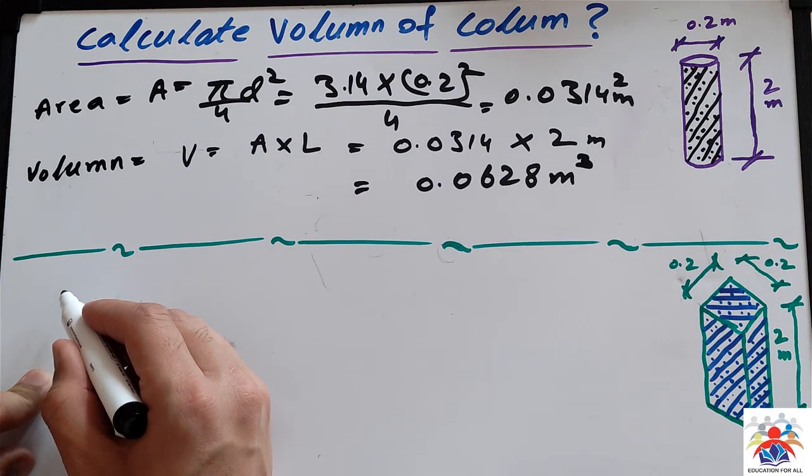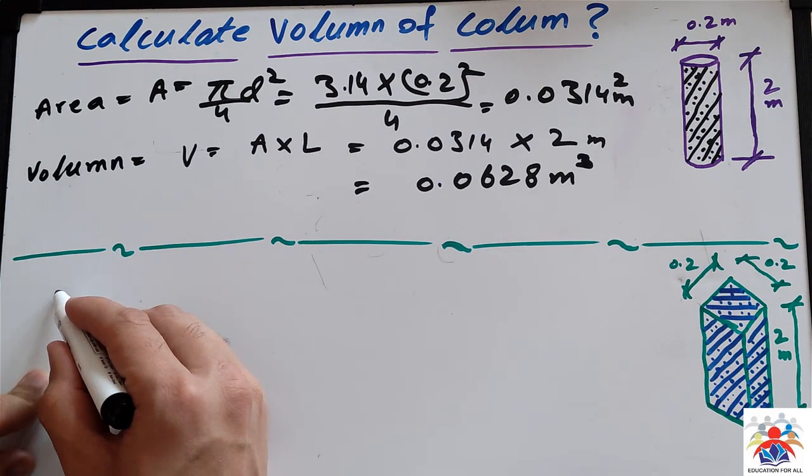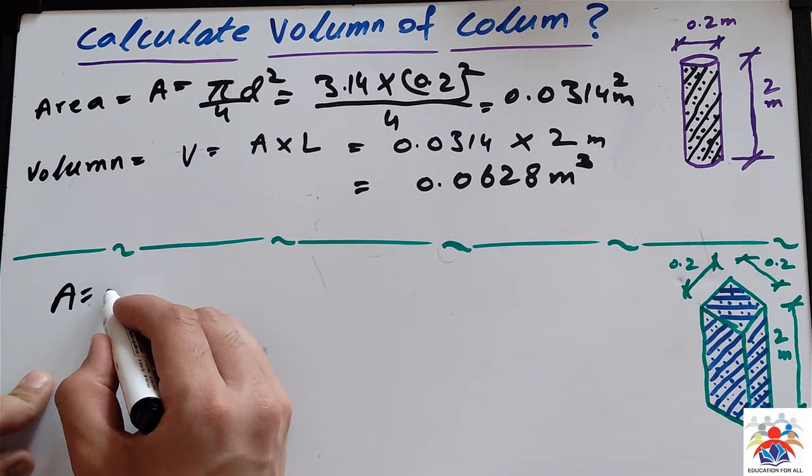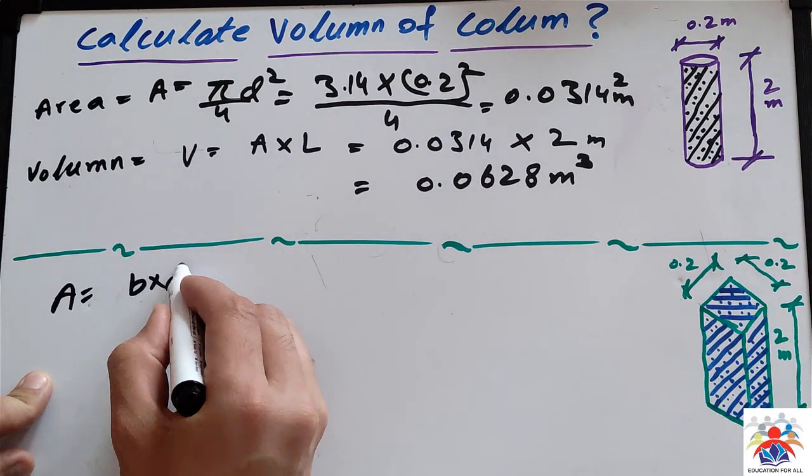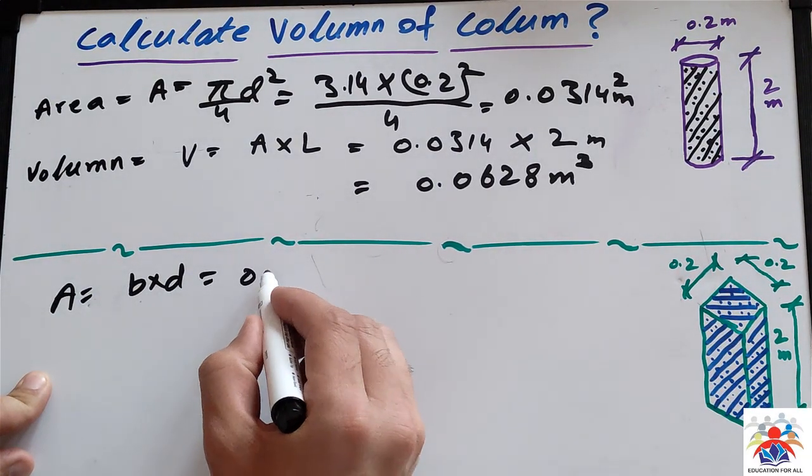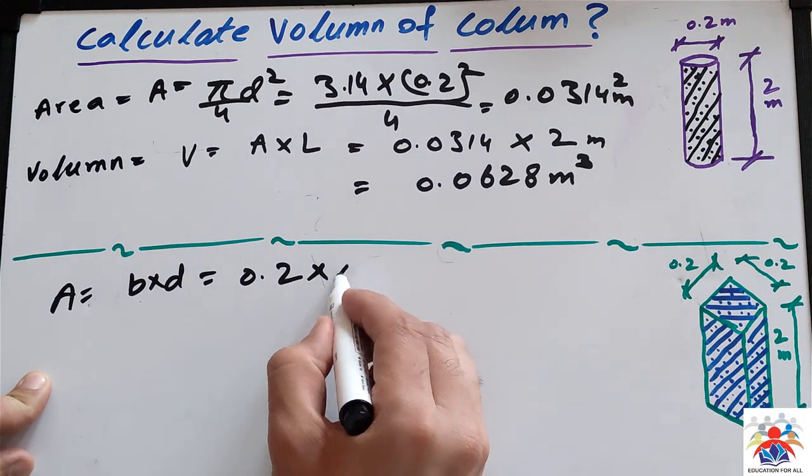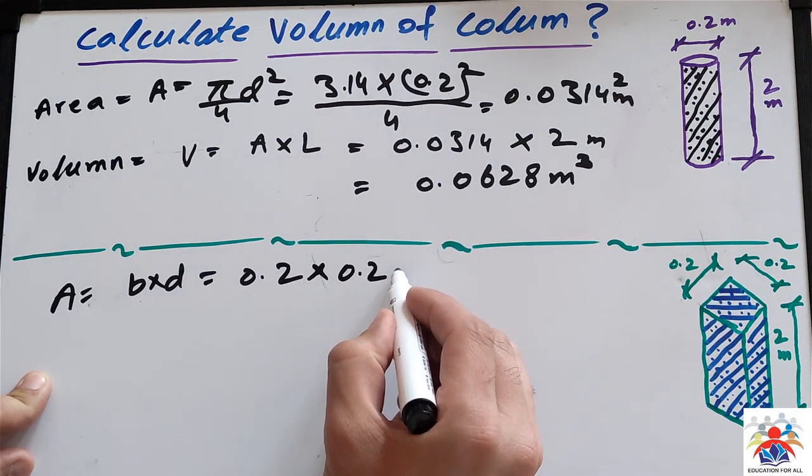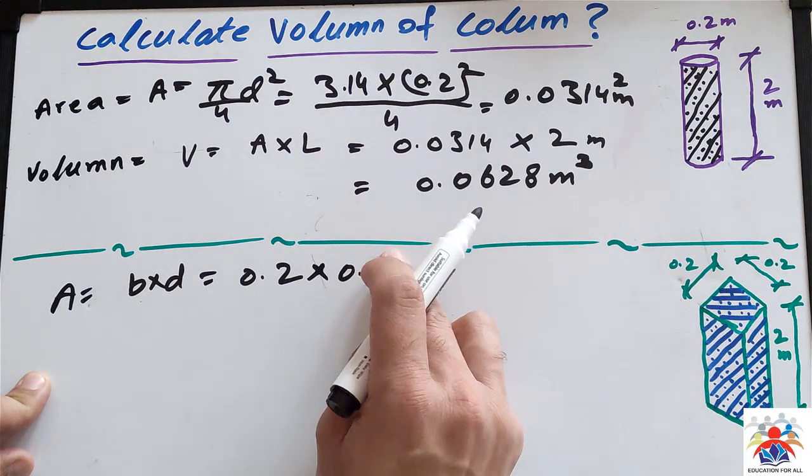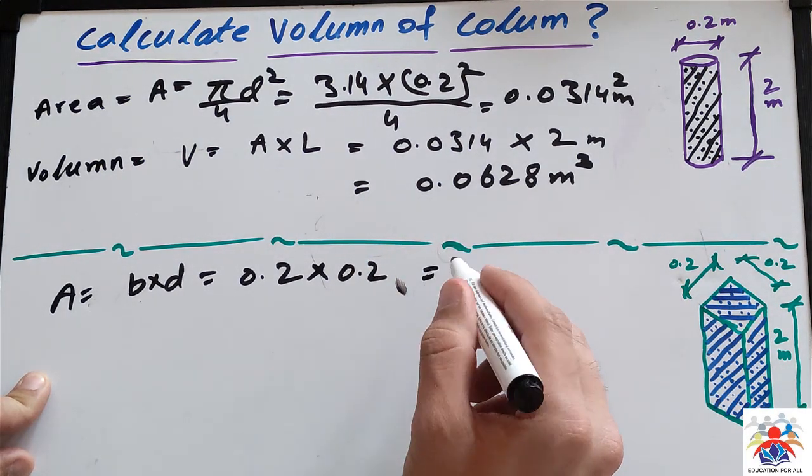The difference is in the area formula, which equals b × d. We have 0.2 meters breadth and 0.2 meters depth or width—it's the same thing. The answer is 0.04 m².